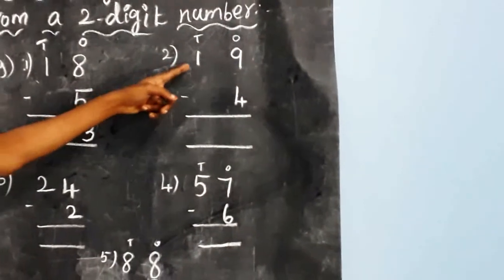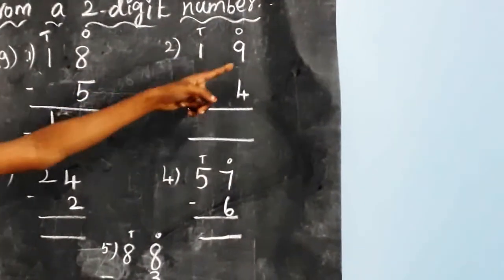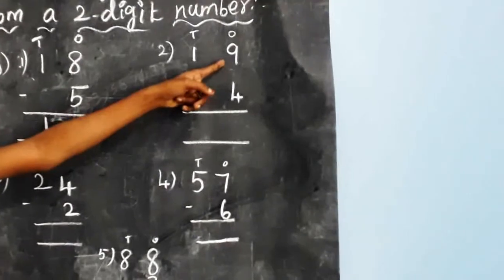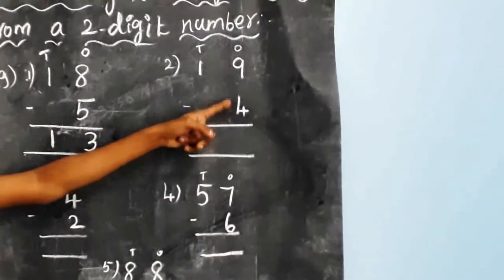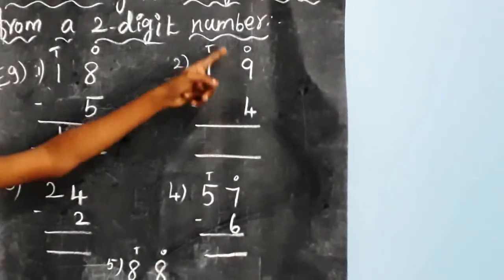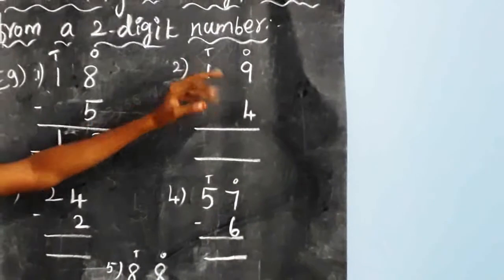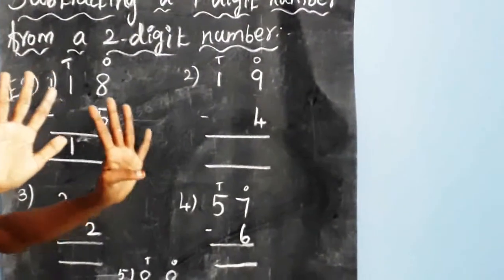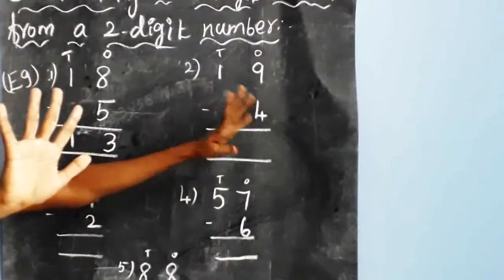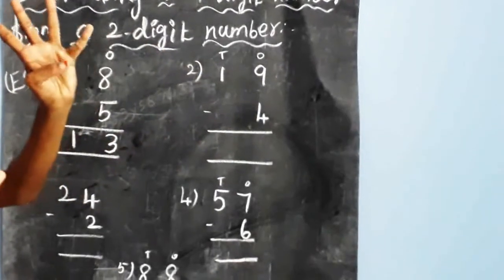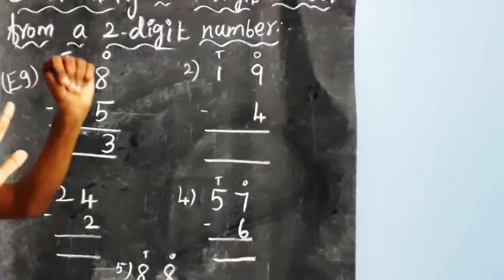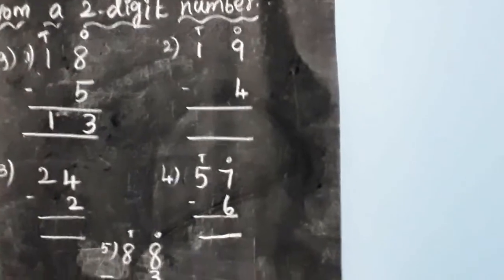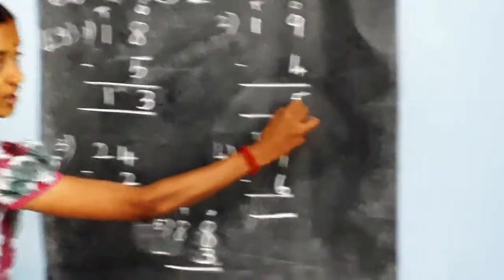Now look at the next sum: nineteen minus four. Here nine is in the ones place and four is in the ones place of the second number. Take a finger of nine and subtract four: one, two, three, four. The balance is five.